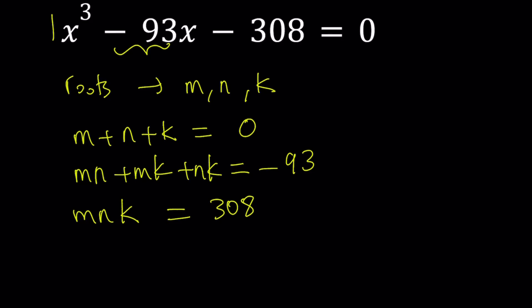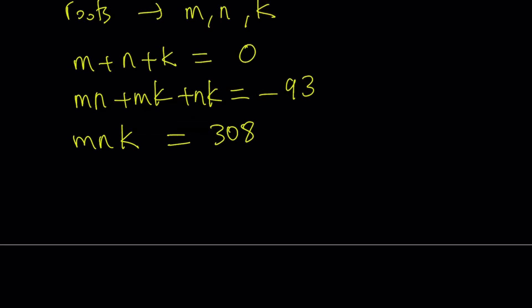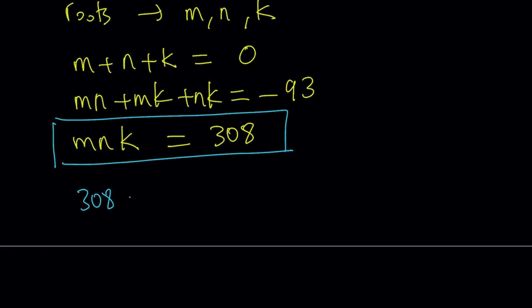Like I said earlier, the statement didn't say integers, but we'll definitely check for them. So let's go ahead and take a closer look at the product. We have mnk, which is the product of three numbers, and 308 can be factored. Let's go ahead and factor it. 308 can be written as 2 times 154, 154 can be written as 2 times 77, and 77 can be written as 7 times 11.